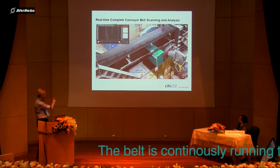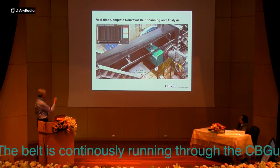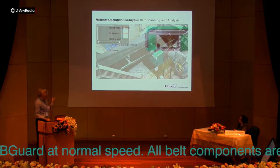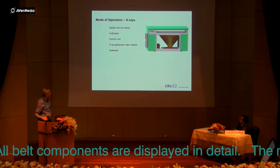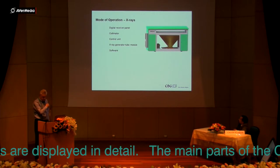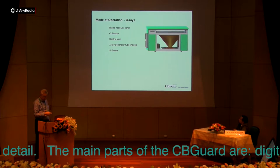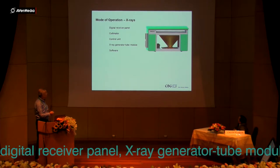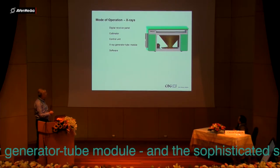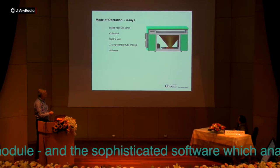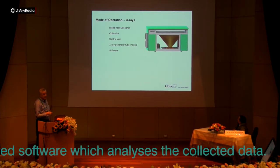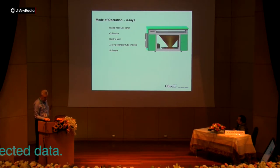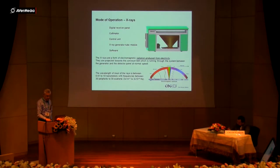The belt is moving through this system at full speed, and at the same time you can see the inside and also the outside of the belt. The main components of this system are the receiver panel, the collimator, the control unit, and the X-ray generated tube module. Externally, there is software which analyzes the data that this system is collecting.